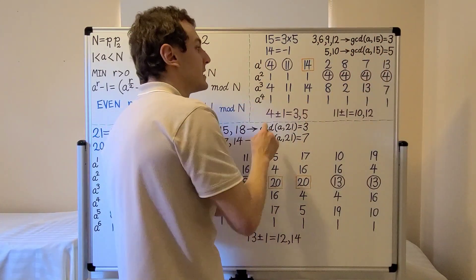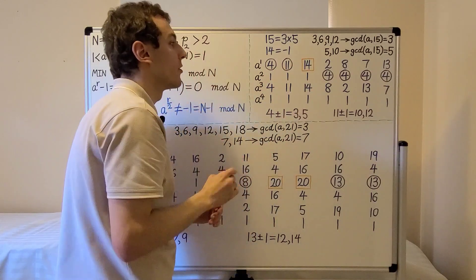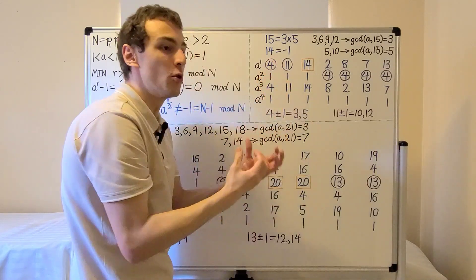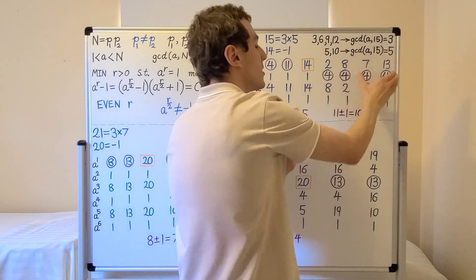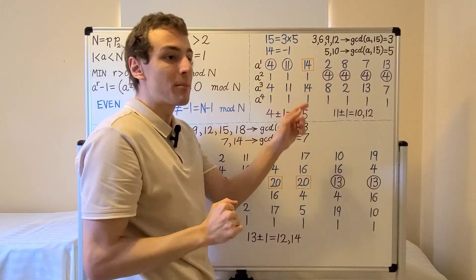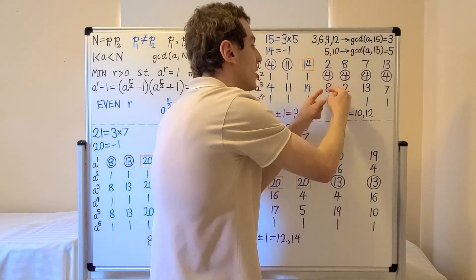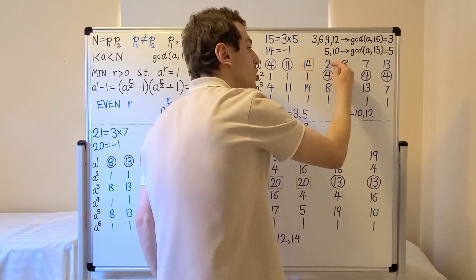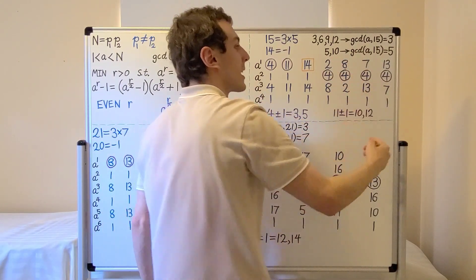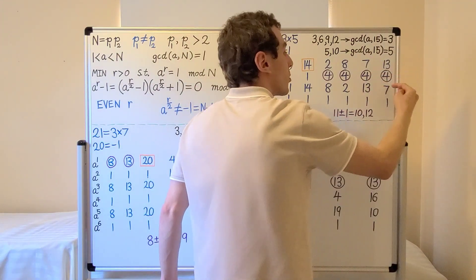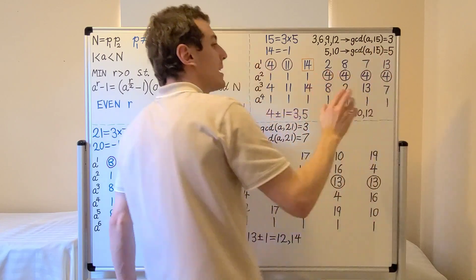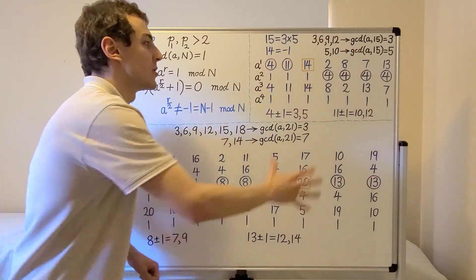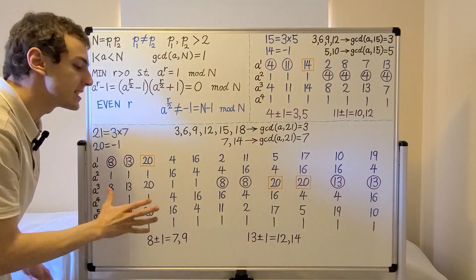Another interesting observation: 4, 11, and 14 are their own multiplicative inverses mod 15, since squaring them gives 1. The other values come in multiplicative inverse pairs, and the sequences of powers appear in opposite orders. For example, for a=2 the sequence is 2, 4, 8, and for its inverse a=8, the sequence is 8, 4, 2 — the same numbers in reverse order, because they are multiplicative inverses mod 15.